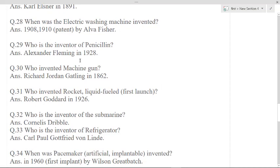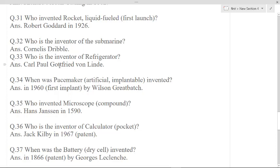Who invented machine gun? Richard Jordan Gatling in 1862. Who invented rocket liquid fuel first launch? Robert Goddard in 1926. Who is the inventor of submarine? Cornelis Drebbel. Who is the inventor of refrigerator? Carl Paul Gottfried von Linde. When was pacemaker artificial implantable invented? In 1960, first implant by Wilson Greatbatch.